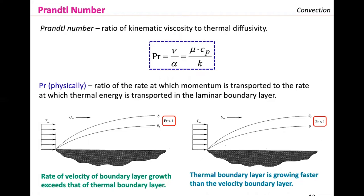So far we need to have three dimensionless numbers in mind for convection: the Reynolds, the Nusselt, and the Prandtl. It is the Nusselt that is going to help us to calculate the convective heat transfer coefficient at the end, as you will see in the next examples.